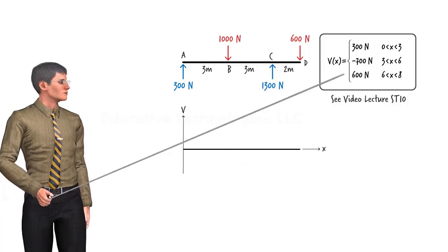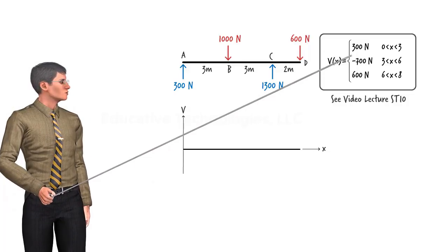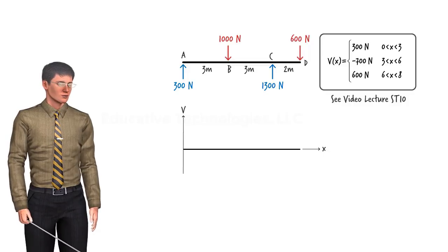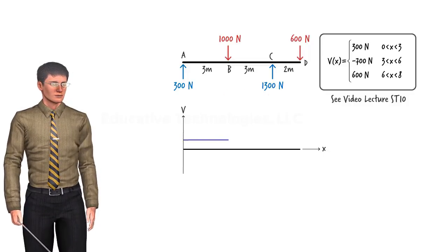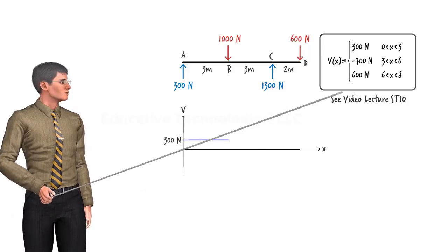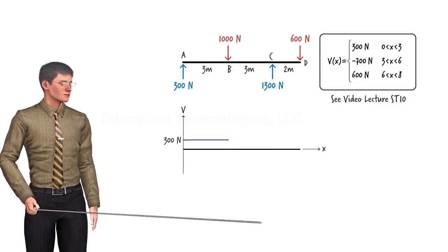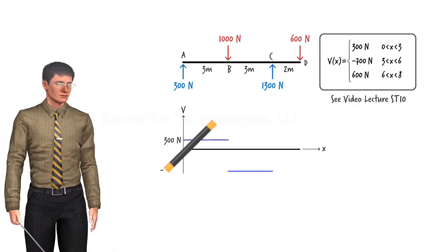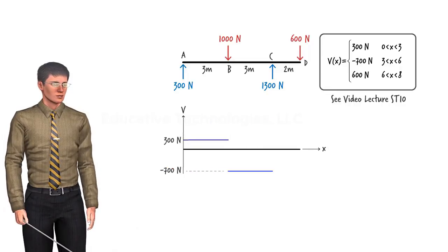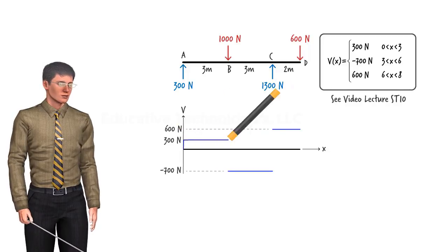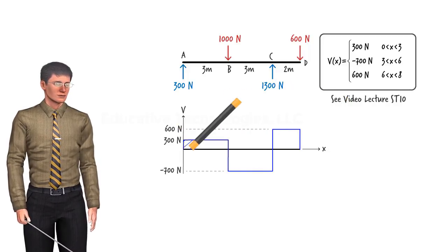This is the equation for the shear in the left segment of the beam. The equation tells us that shear is constant throughout the segment, so its graph looks like this. The second equation covers the shear in the middle segment of the beam, and it can be graphed this way. The third equation translates into this line. So here is the shear diagram for the entire beam.